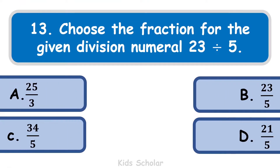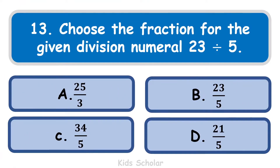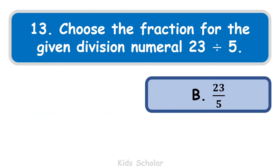Next question is: choose the fraction for the given division numeral — what is the fractional form of 23 divided by 5? The options are 25 by 3, 23 by 5, 34 by 5, and 21 by 5. You can see that 23 is given in the question, so the correct answer is B, that is 23 by 5.